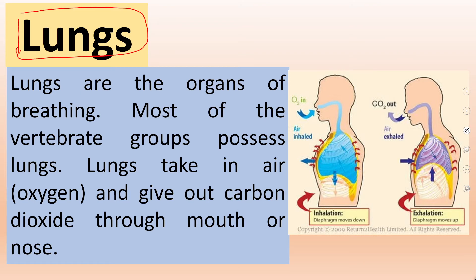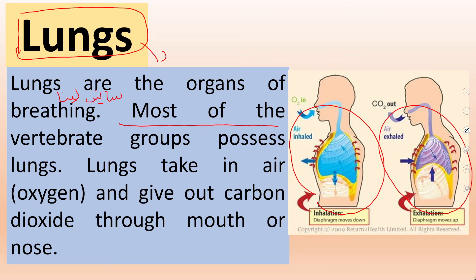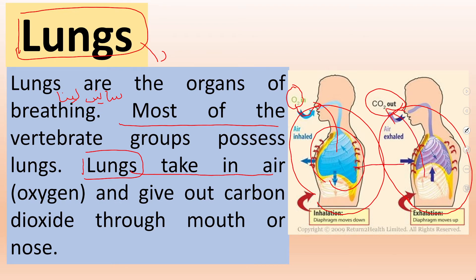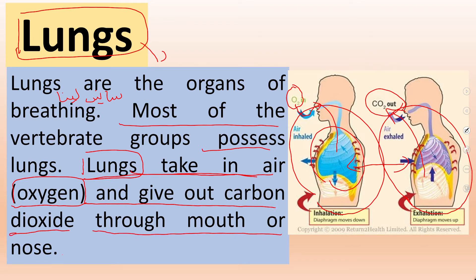Next is lungs. Lungs are the organs of breathing — breathing means saans lena. Most vertebrate groups possess lungs. Lungs take in air, and from air we get oxygen, which is pumped to the lungs. We give out carbon dioxide through the process involving the lungs. So lungs take in air; from that air we get oxygen, and we give out carbon dioxide through our mouth and nose. The main purpose of lungs is breathing.